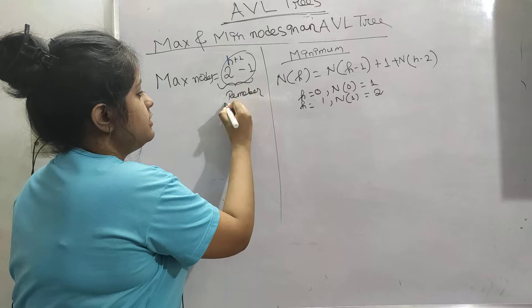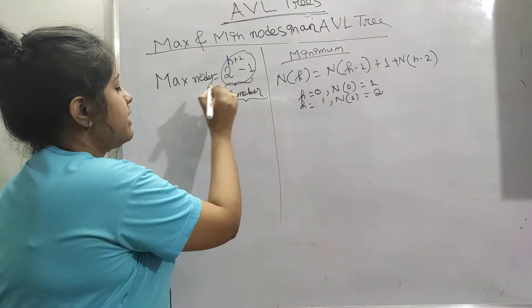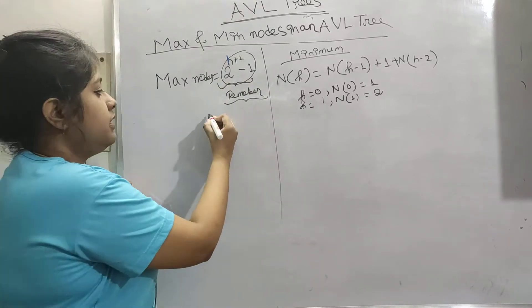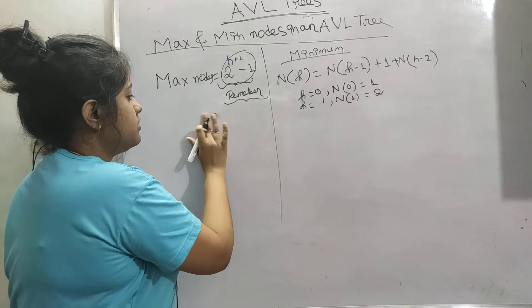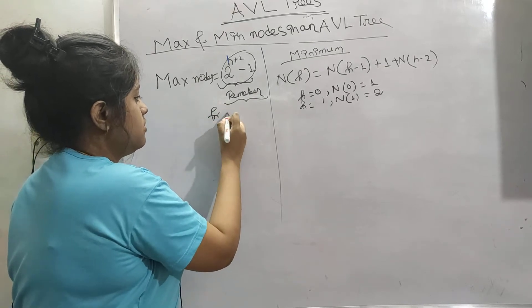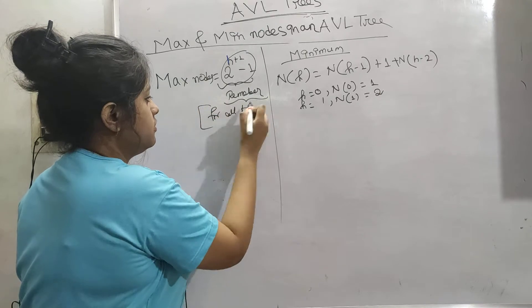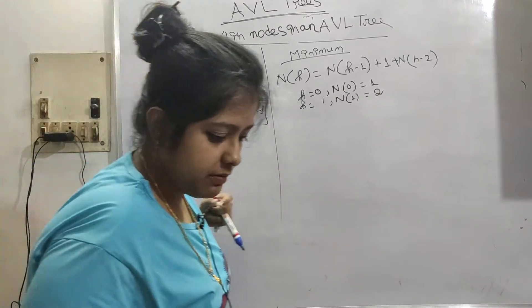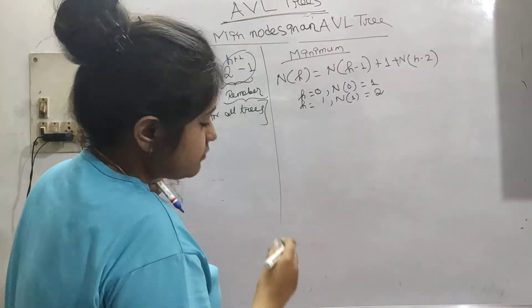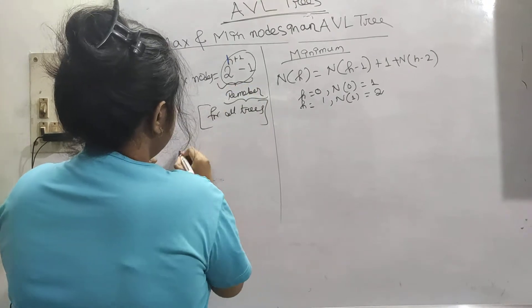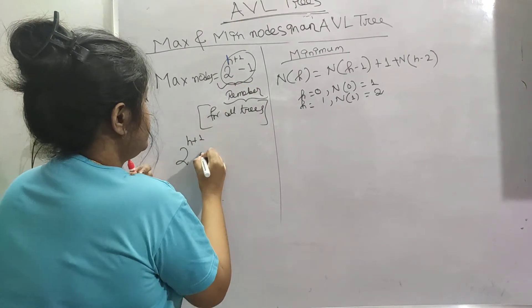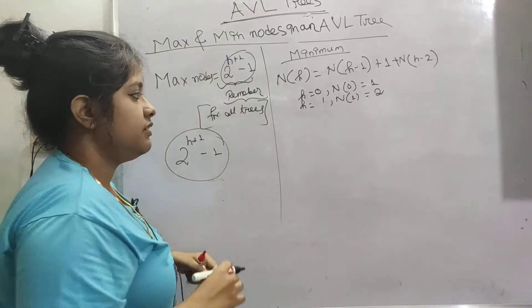This is generally asked and this maximum number of nodes will be equal for all trees. Please remember this formula: 2 to the power h plus 1 minus 1.